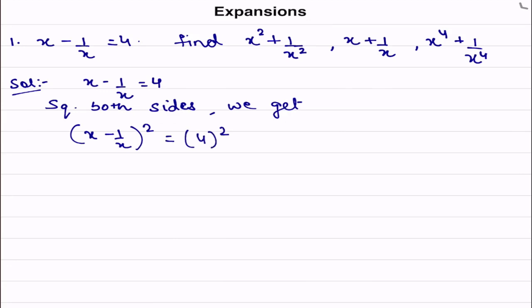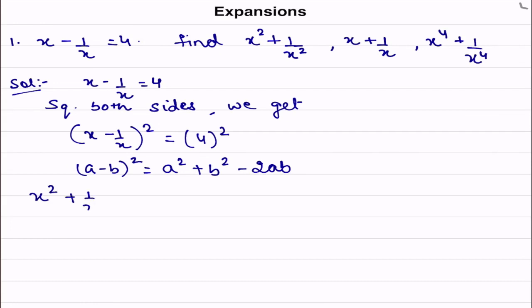Now which formula will we use here? Since the expression is x minus 1 by x, we use the a minus b whole square formula: a squared plus b squared minus 2ab. So on the left-hand side it becomes x squared plus 1 by x squared minus 2 into x into 1 by x, and that equals 16.